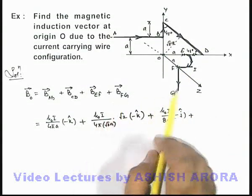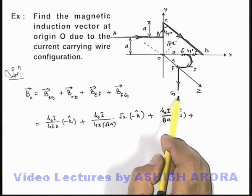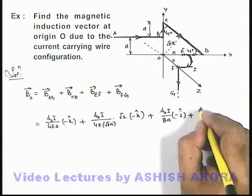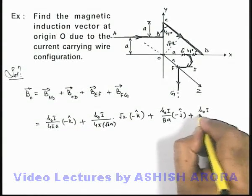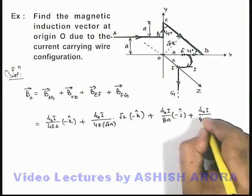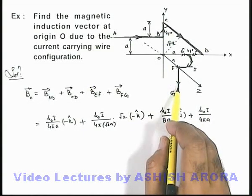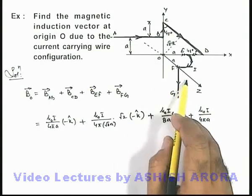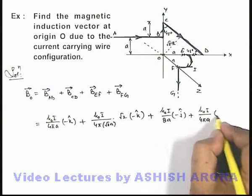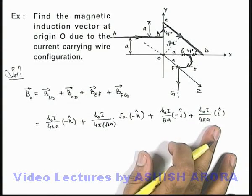The last term is wire segment F-G, which is again a semi-infinite wire located at a distance 'a' along y. Its magnetic induction is μ₀i/4πa. The wire lies in the y-z plane, and by the right-hand thumb rule its magnetic induction is along the plus-x direction, so we multiply by the unit vector +î.